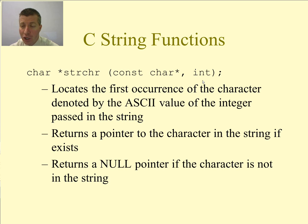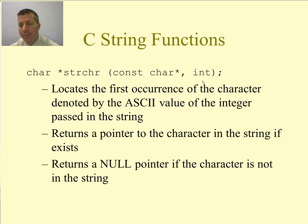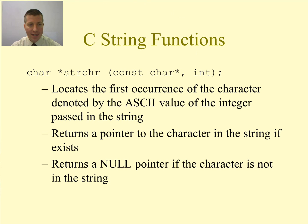strchr is going to find the first occurrence of that character in the string, and it's going to return a pointer to that character in the string if it exists. Otherwise, it's going to return a null pointer. So it returns a char star, which is a pointer to that character inside of our string. If that character doesn't exist in the string, it returns a null pointer.